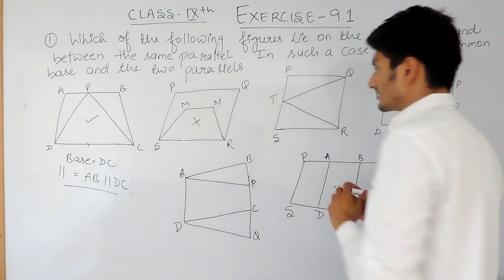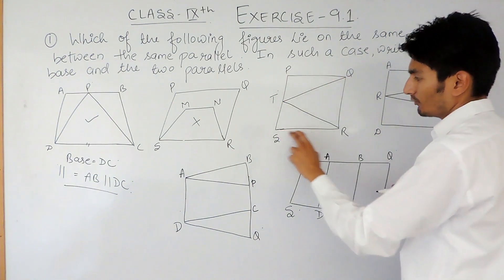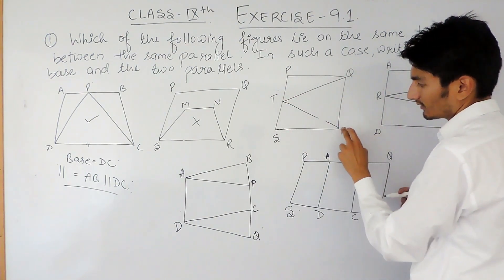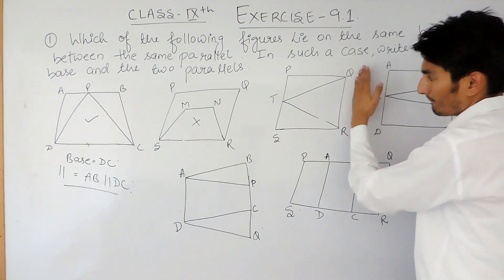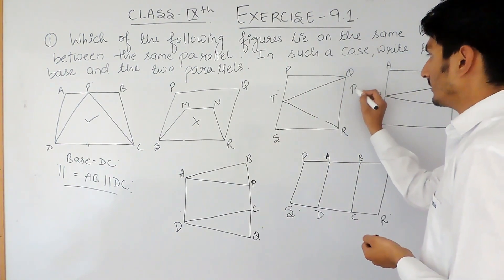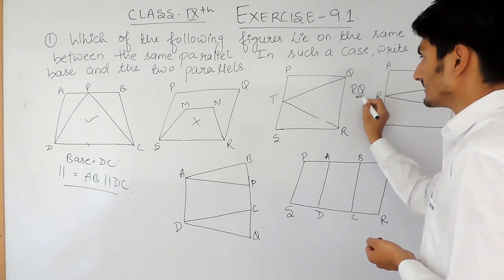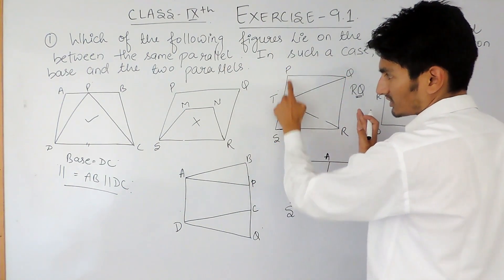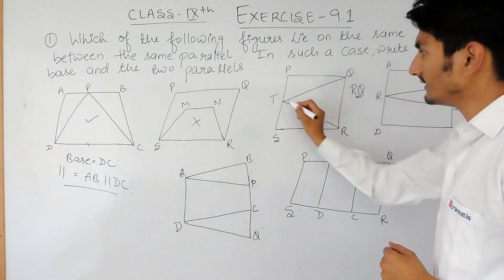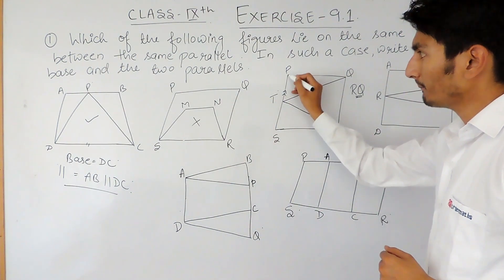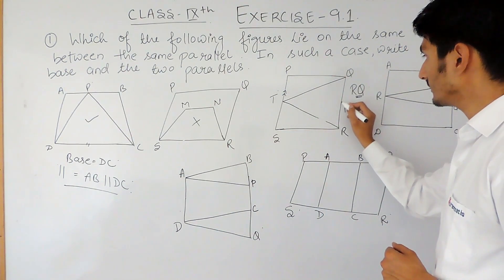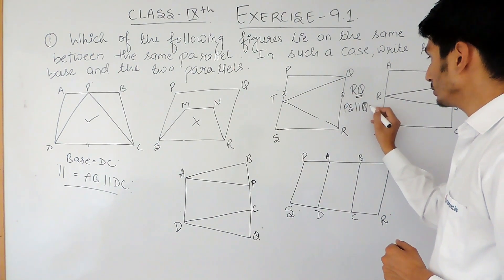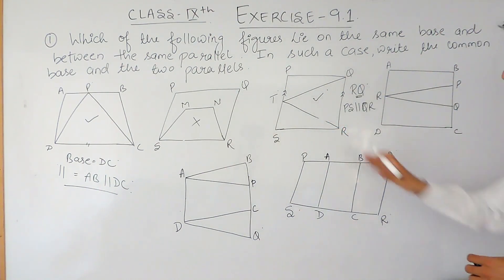Now if you look at this figure, again it has two figures — one is a quadrilateral, which is a parallelogram, and the second is a triangle. Both have the same base, that is RQ. And obviously they lie between the same parallels. Those two parallel lines are PS parallel to QR. So the base is RQ and the parallels are PS and QR.